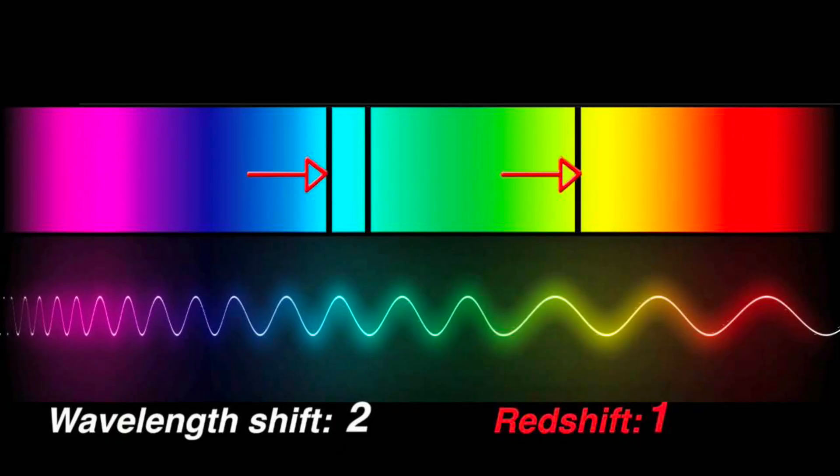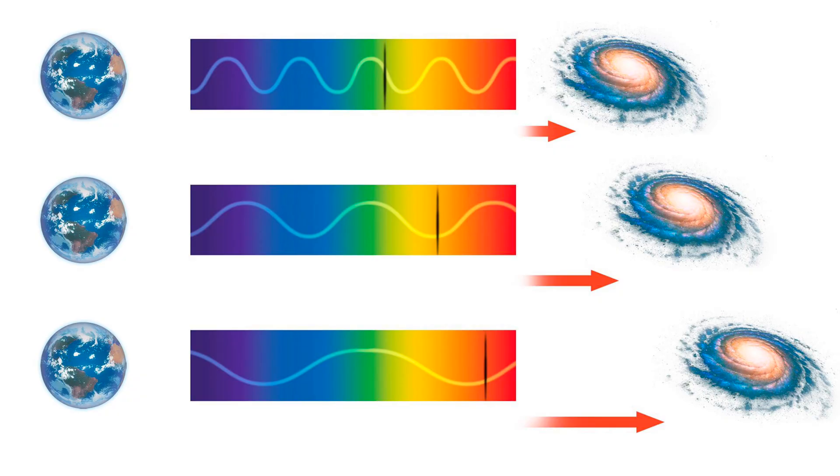The Big Bang Theory explains the observed redshift of distant galaxies, which is the shift of their spectra towards longer wavelengths. This redshift is caused by the expansion of the universe, and the farther away a galaxy is, the greater its redshift.